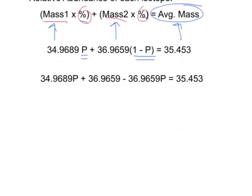Expanding out, we've got 34.9689p, and then we distribute it. So we have 36.9659 minus 36.9659p, and that's still equal to our average mass.